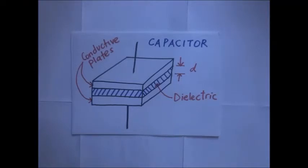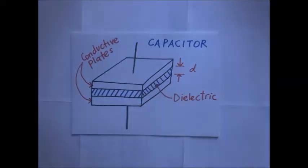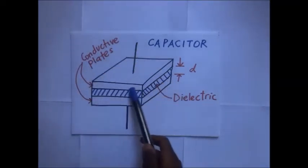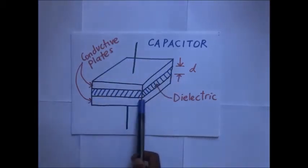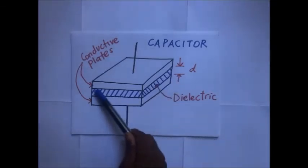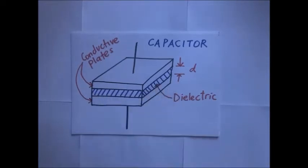What exactly is the capacitor? It is simply a passive two-terminal device which is used to temporarily store electrical charge. In our diagram here we have the capacitor with its two terminals, which are connected to two conductive plates — one plate on the top and one plate at the bottom.